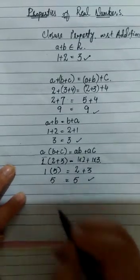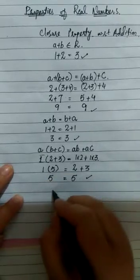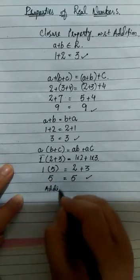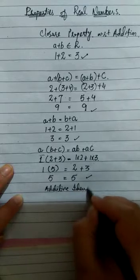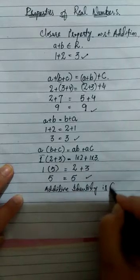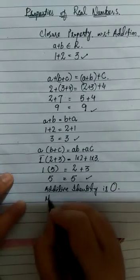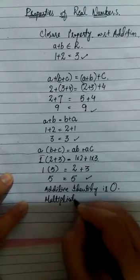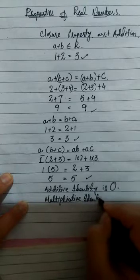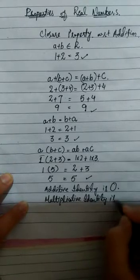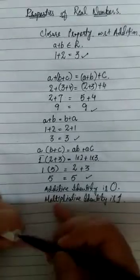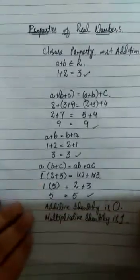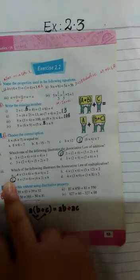Then the additive identity is 0, and the multiplicative identity is 1. Now let's come to Exercise 2.2.